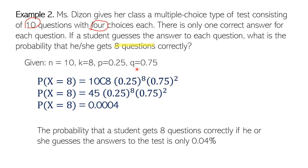Substituting these values, the probability that X equals 8 correct answers is: 10 taken 8, times 0.25 raised to 8 (for 8 successful answers), times 0.75 raised to 2 (for 2 wrong answers). 10 taken 8 is 45. Multiplying all values gives 0.0004, or 0.04%. The probability that a student gets 8 questions correctly by guessing is only 0.04% — very low, so it's very unlikely that the student can pass the test.